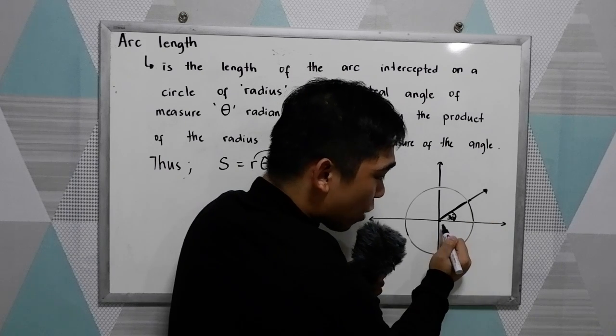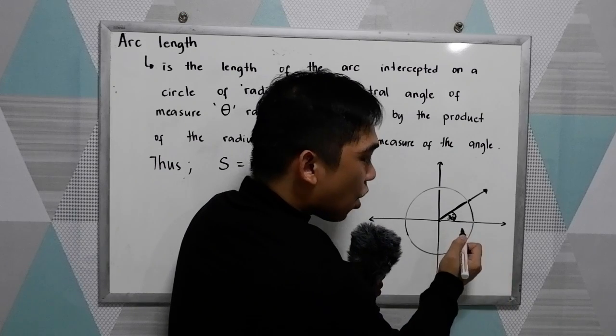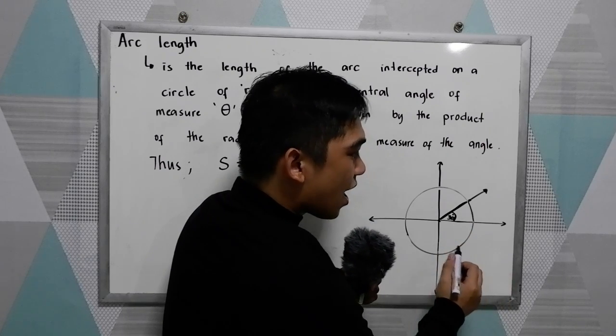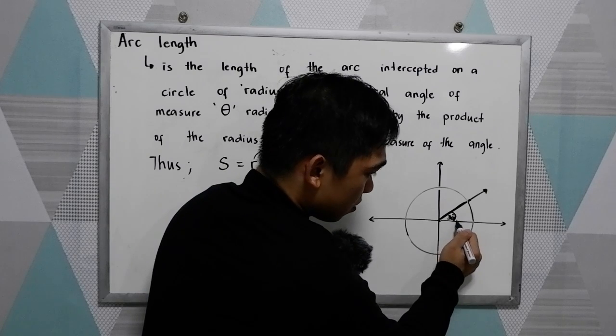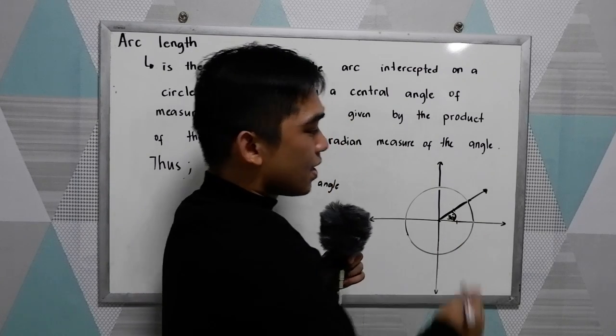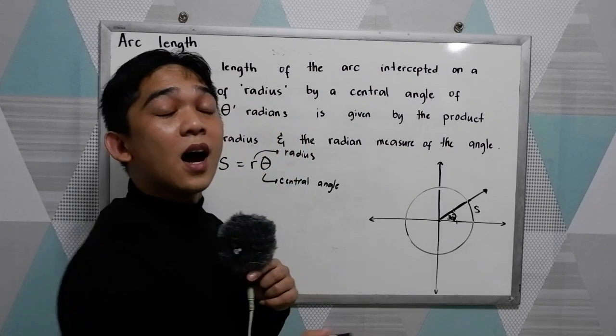And of course, this is our radius. In our circle, all the radius have equal measure. So this is our sector or the arc length.